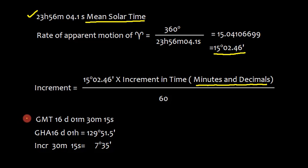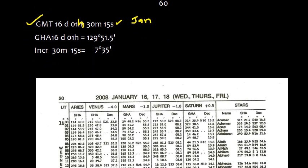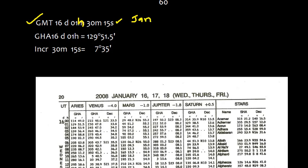Now let us have a look here. Suppose the GMT is 16 day 01 hour 30 minutes and 15 seconds, that is for the month of January for example. If you look at the Almanac you will see here this is the January Almanac, 16 January and this is Aries.